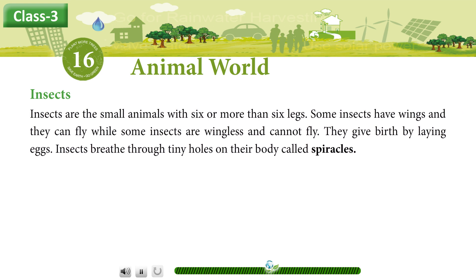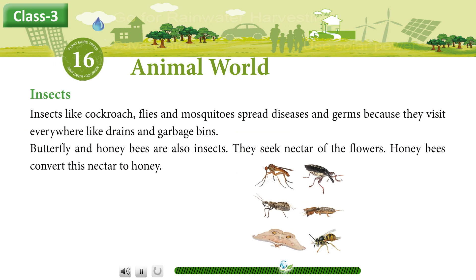Insects. Insects are the small animals with six or more than six legs. Some insects have wings and they can fly, while some insects are wingless and cannot fly. They give birth by laying eggs. Insects breathe through tiny holes on their body called spiracles. Insects like cockroach, flies and mosquitoes spread diseases and germs because they visit everywhere like drains and garbage bins.